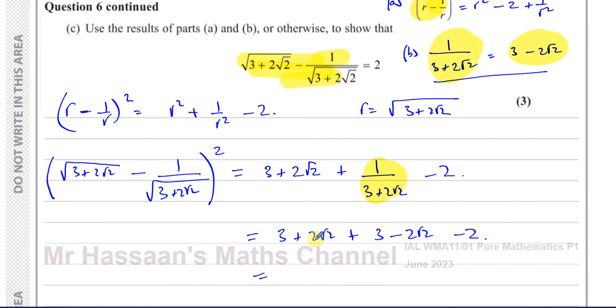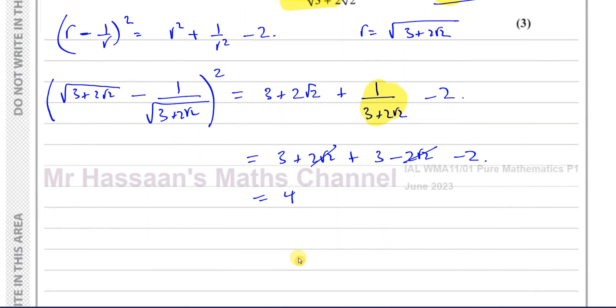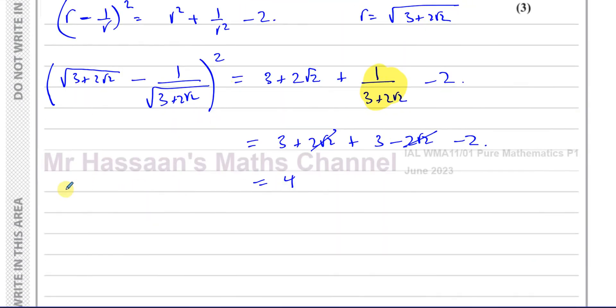This is 3 plus 3, which is 6. These cancel out. 6 minus 2 is 4. So I can say, therefore, that all of this is equal to 4. So the square root of 3 plus 2 root 2 minus 1 over the square root of 3 plus 2 root 2, all squared is equal to 4.